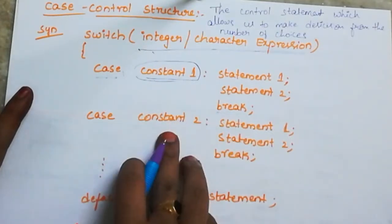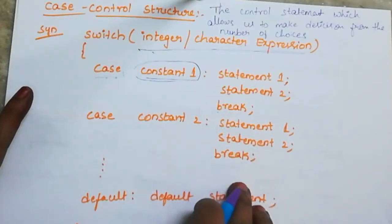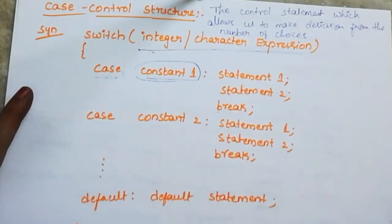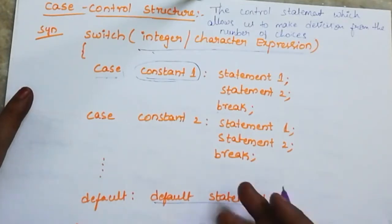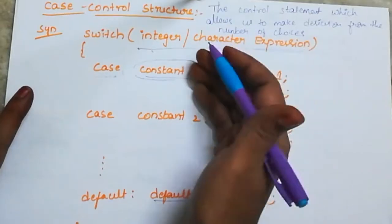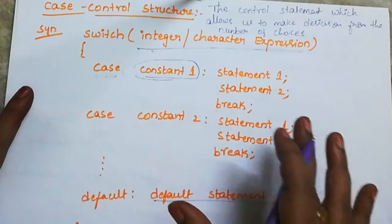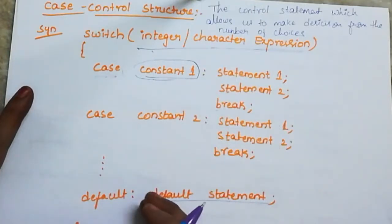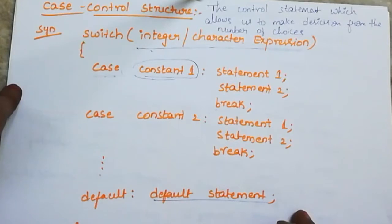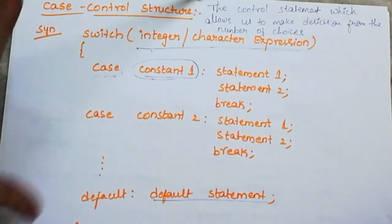Next, case constant 2, again with statement 1, statement 2, and break — the same pattern continues. If no case value matches the input, control goes to the default case. The default handles invalid or unmatched values. This is the overall structure of a switch statement.